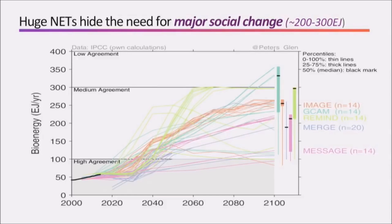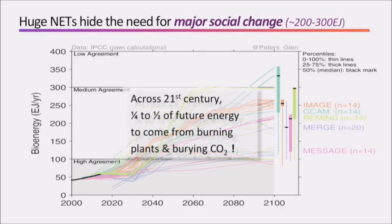This may not mean much to you — it's about 200 to 300 extra exajoules after 2060, which is about half of current energy demand. So imagine all of the world's energy today, and half of that comes from burning plants. That's what we're planning for this century. Across the 21st century, a quarter to a half of future energy will come from burning plants and burying CO2. And that's in every model.